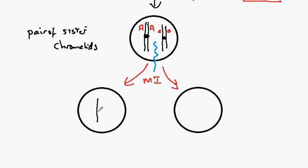So that we have over here big A, big A, and over here this cell would have little a, little a.